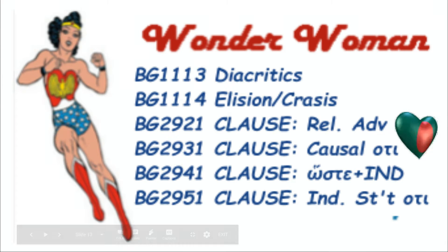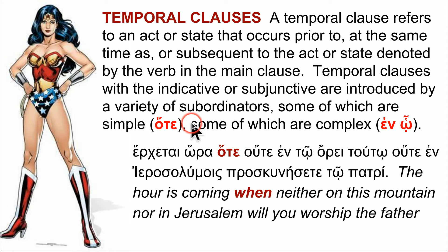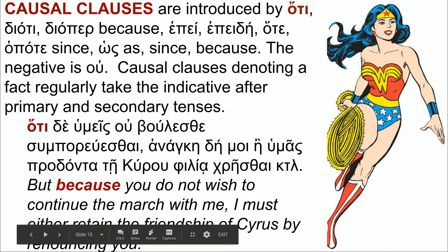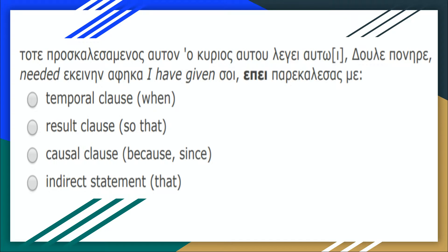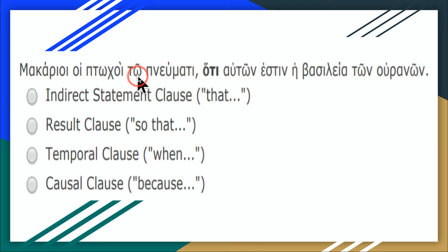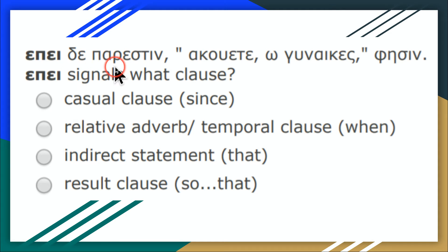Let's talk about clauses — specifically two clauses together: the relative adverb clause and the causal clause. For the National Greek Exam at this stage, all you need to worry about is 'hote,' which means 'when.' For example: 'the hour comes when neither on the mountain nor in Jerusalem' — translated as a temporal clause meaning 'when.' Causal clauses are signified by 'hote' and 'epei,' or also 'epeidé.' So 'hote' can mean 'because you do not wish.' Here 'epei' is a relative adverb clause of 'when' — temporal. 'Hote' in 'Blessed are the poor in spirit' is a causal clause.